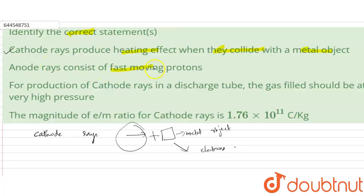Next, anode rays consist of fast moving protons. Of course, anode rays do contain protons, but they don't only consist of protons. There are many other small particles present in anode rays, so this is not fully true.